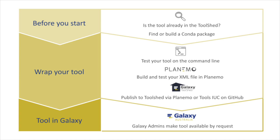If you decide you definitely want to wrap a tool, the first step is to get on the command line and conda install your package. This gives you a chance to test the tool on the command line, make sure it's working, and get familiar with the parameters. Next, you build your tool XML file and test it with Planemo. Finally, if you're happy with your tool, you can publish it to the Tool Shed — either using Planemo to push it directly, or by making a pull request to tools IUC on GitHub, where your tool will undergo review. Then you can request your local Galaxy admin to install it.